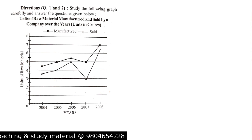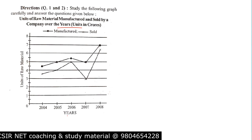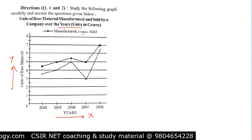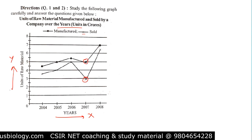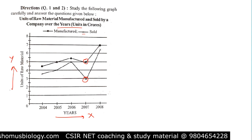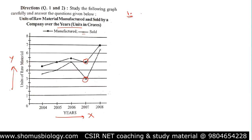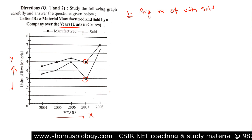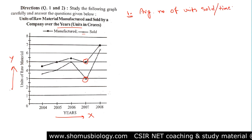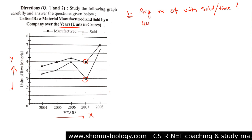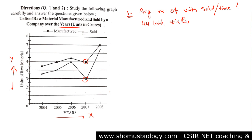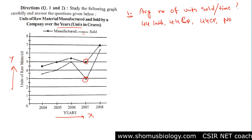Next problem: study the graph of units of raw material manufactured and sold by a company over several years. The x-axis shows years and the y-axis shows units of raw material. The black dot represents manufactured and the cross represents sold. There is a visible dip in both sold and manufactured in 2007. Question 1: what is the average number of units sold over the years? Options: 44 lakh, 4.4 lakh, 4.4 crore, 44 crore.